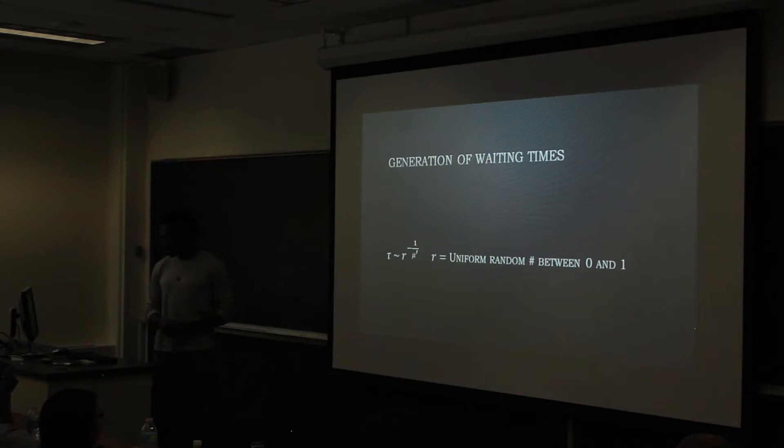And the generation of these waiting times, the tau goes as r to the minus 1 over mu prime, r being a random number from 0 to 1, which gives us these random times for simulation.